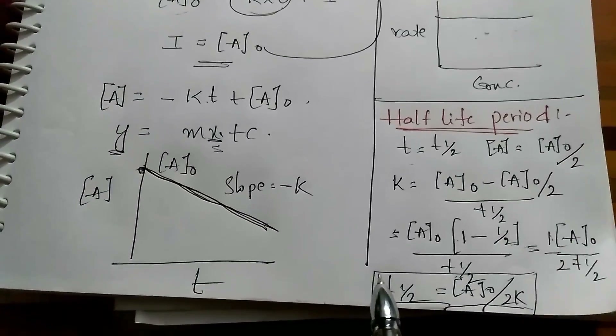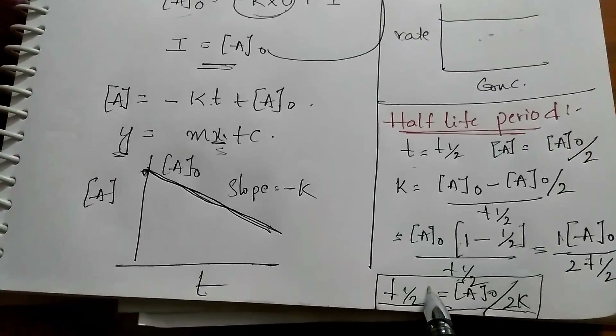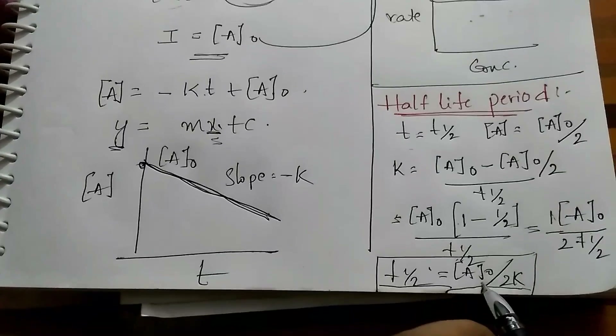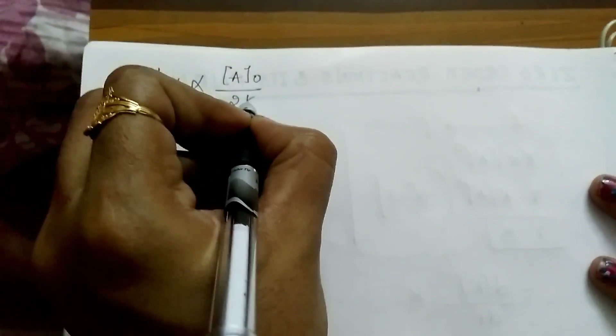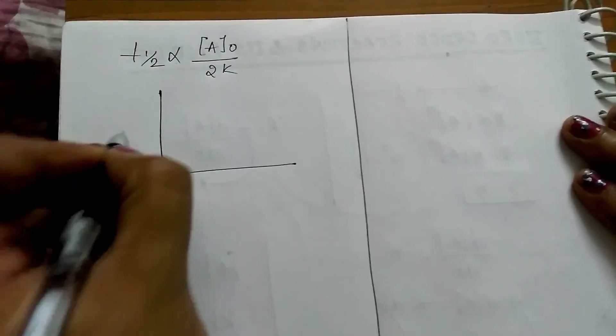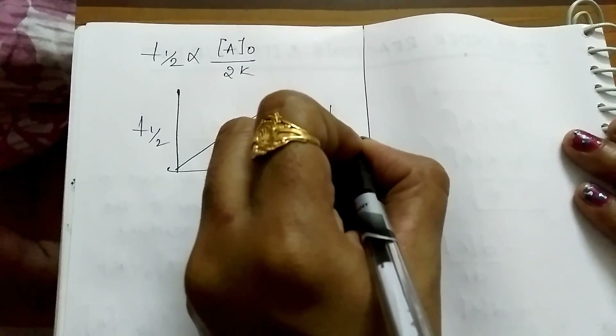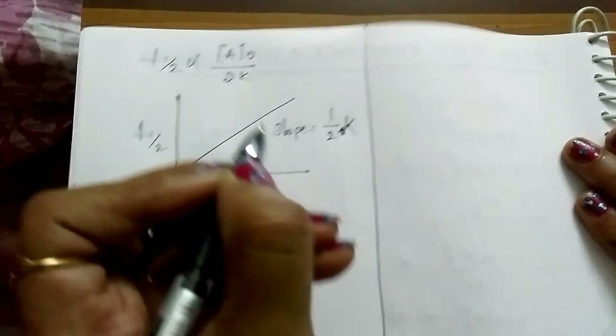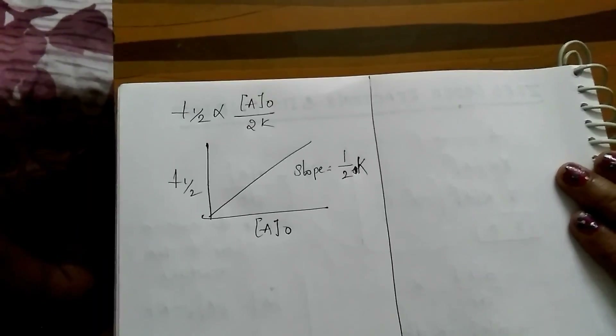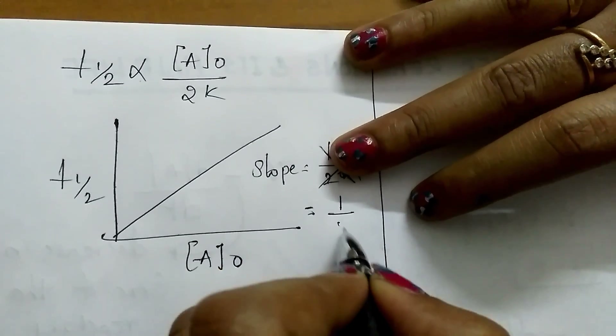This expression T half = A naught / 2K indicates that the half-life of a zero-order reaction is directly proportional to the initial concentration of the reactants. If we draw a graph between T half and A naught, we get a straight line passing through the origin where the slope is equal to 1/2K.